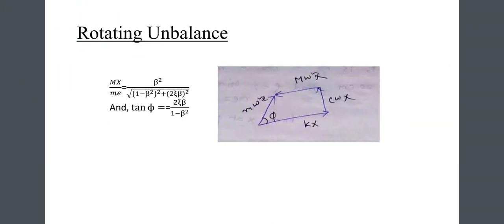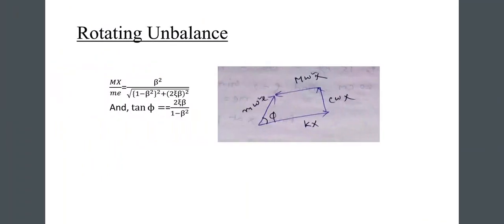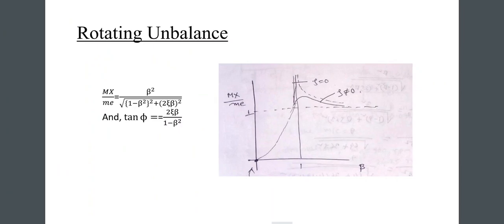From this we get: M·X / (m·e) equals beta² divided by the square root of (1 minus beta²)² plus (2·zeta·beta)², and tan(phi) equals 2·zeta·beta divided by (1 minus beta²). The figure shows the free body diagram alongside the corresponding amplitude-ratio graph.